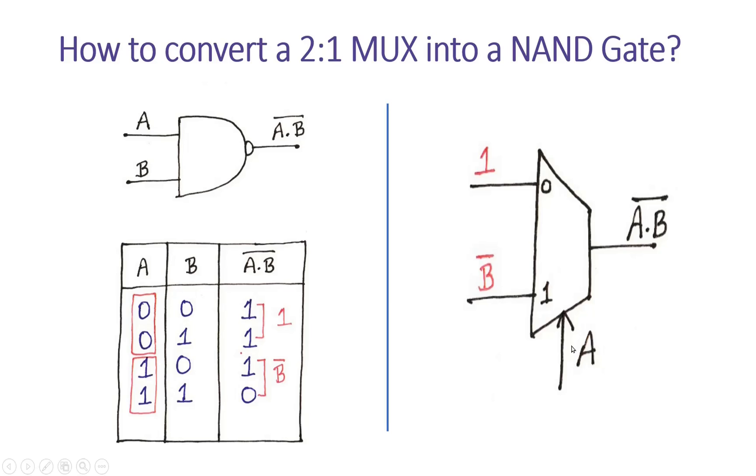I know that when A is zero, I0 will be passed at the output of the 2:1 multiplexer. Let us see what the expected output is. When A is zero, the expected output is one, so I will type one at the I0 input.